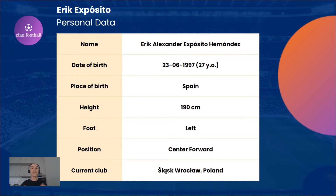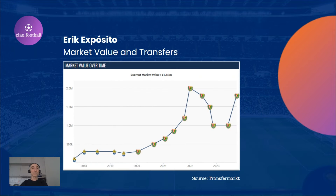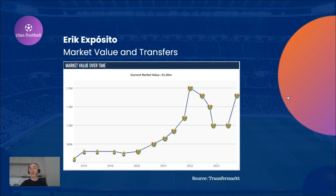His contract expires next summer, making Eric an ideal target for teams in search of a classic center forward. Looking at market value and transfers, we see that Eric's current market value is close to his highest one, and after this season it may comfortably outgrow that previous record. Since his contract expires this summer, he may leave Poland as a free agent if his team doesn't hurry up signing a new one.